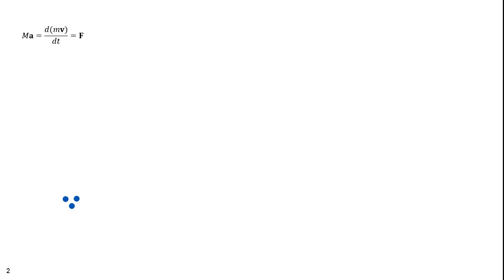We said before that the total mass times acceleration equals d(mv)/dt, which equals the total external force. If we had a system of particles whose center of mass were moving at a constant velocity, d(mv)/dt would equal zero. Taking the indefinite integral of both sides, we get that mv equals a constant. This means mass times velocity is momentum, and if there are no external forces acting on a system of particles, then the momentum is constant. This is the law of the conservation of momentum.